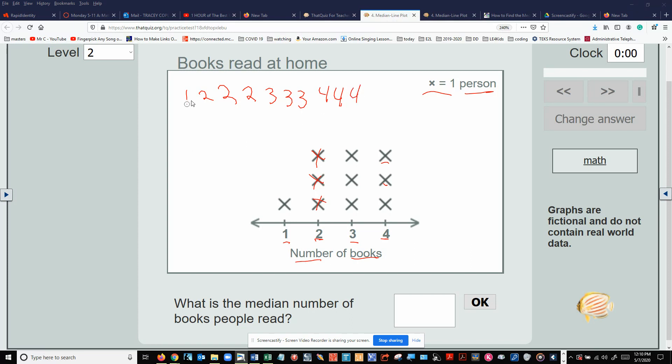Now, let's find the median. One, two, three, four, five, six, seven, eight, nine, ten. There's ten things. One, two, three, four, five. One, two, three, four, five.